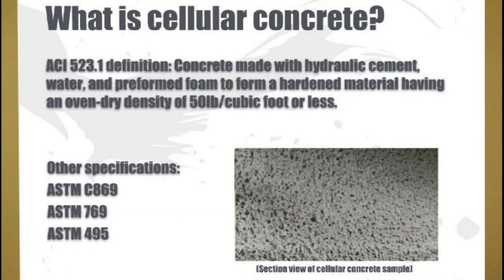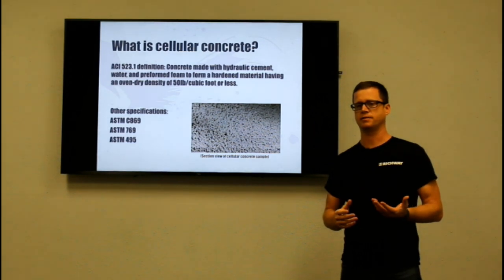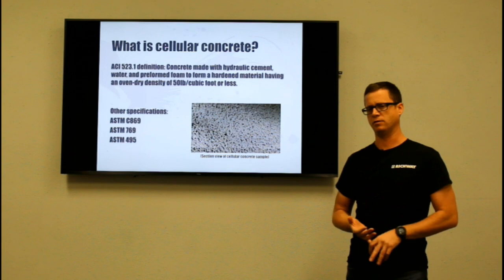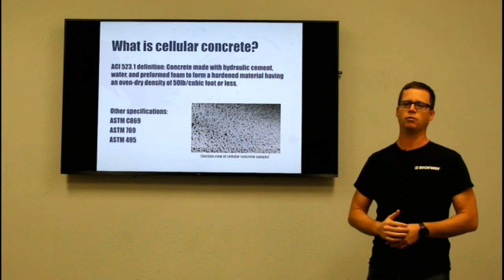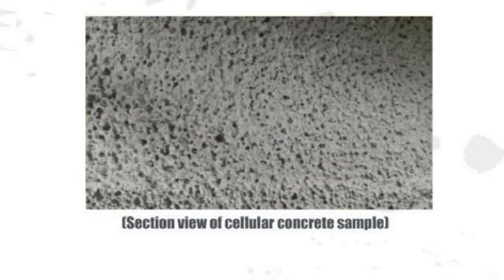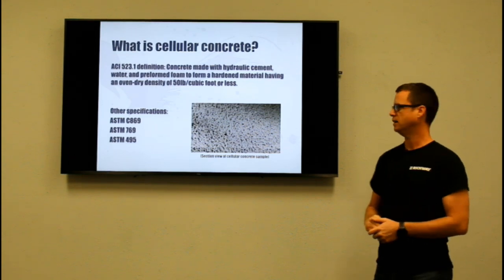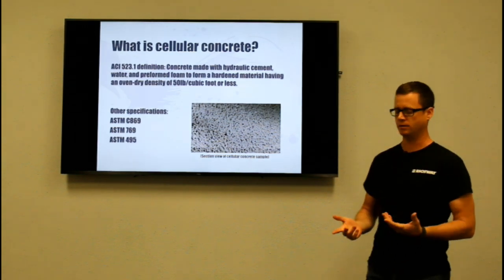So what is cellular concrete? As defined by ACI 523, it's concrete made with hydraulic cement, water, and preformed foam to form a hardened material having an oven dry density of 50 pounds per cubic foot or less. On the left side of the screen there are a couple other ASTM specifications related to cellular concrete — ASTM C495 relates to the testing method, and the other two are more related to the foam concentrates used to generate the foam. This picture here is a section view of a sample of cured cellular concrete, designed to give you a view of what that bubble structure looks like.